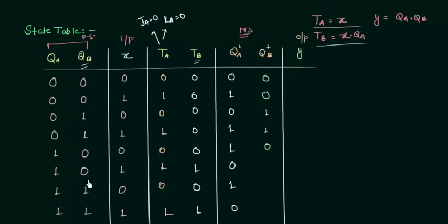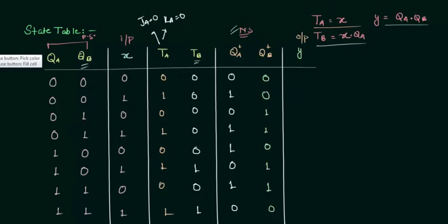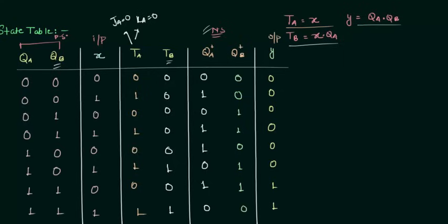Then TB is 1, meaning toggling, and QB is 0, so I take its complement to get 1. Then TB is 0, which is memory, so QB+ equals QB which is 1. Then TB is 1, meaning toggling, and QB is 1, so the complement gives 0. So the complete QB+ values are 0, 0, 0, 0, 0, 1, 1, 0. We now have all next states QA+ and QB+. We also need the output Y = QA AND QB, which gives 0, 0, 0, 0, 0, 0, 1, 1.